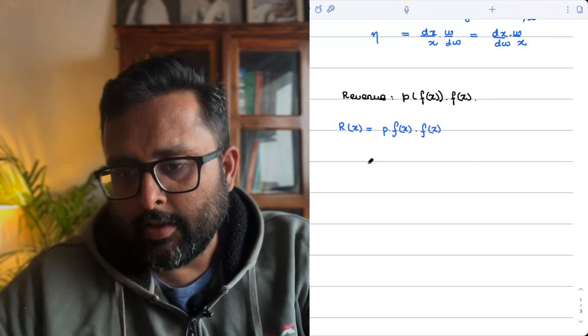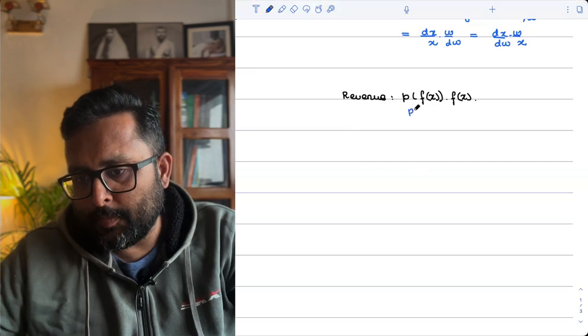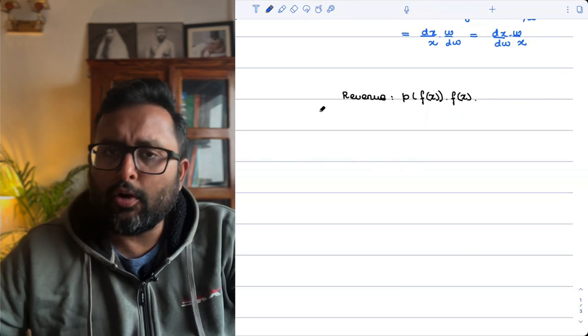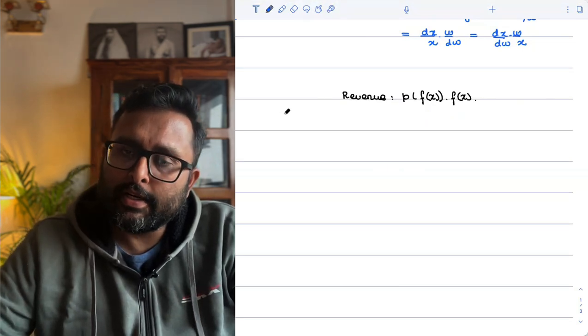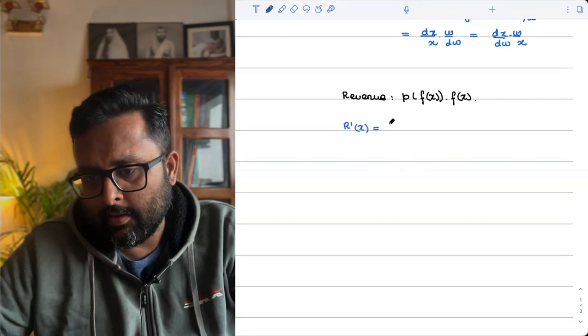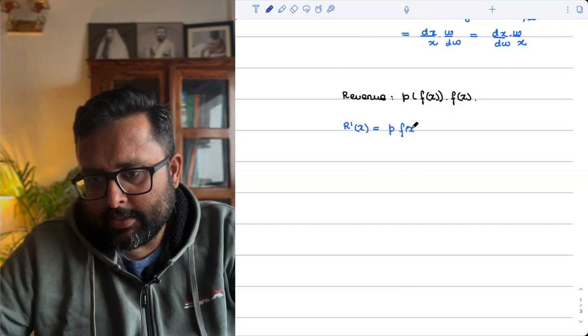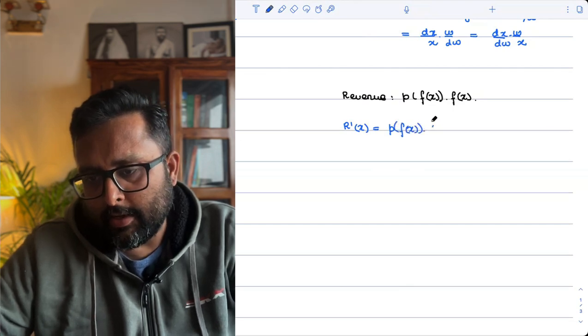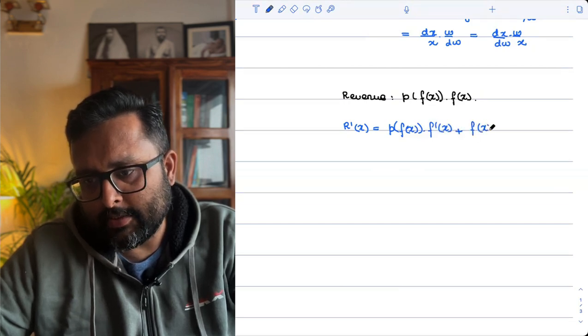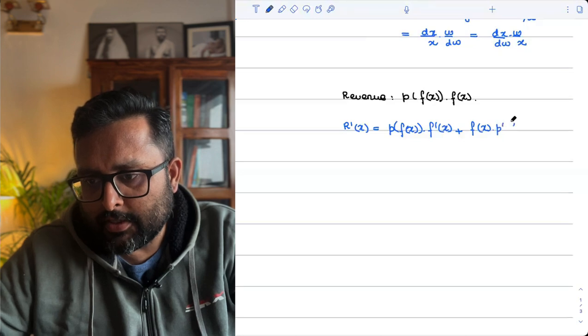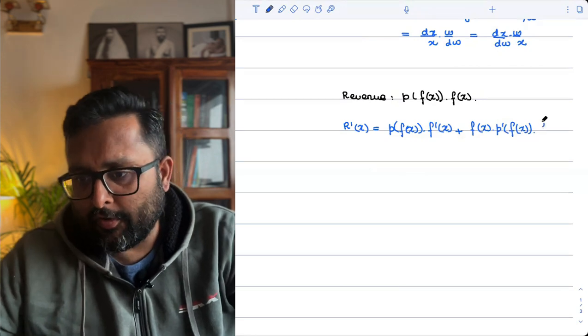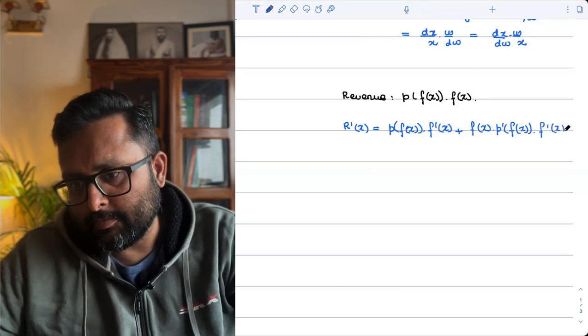P into Y. So this is P as a function of Y into Y. Same thing. So if I want to write now, I have just written everything in terms of X. So what is R dash X? First function as it is into derivative of second plus second function as it is into derivative of first. That is P dash FX into derivative of FX, which is F dash X.